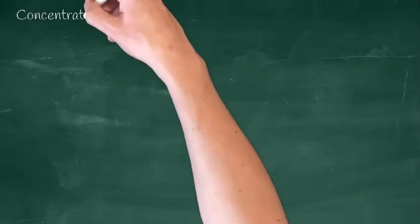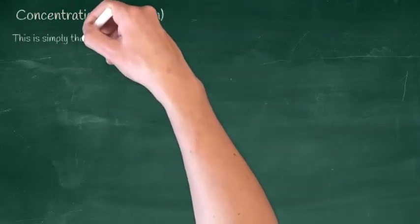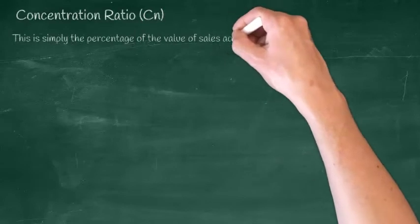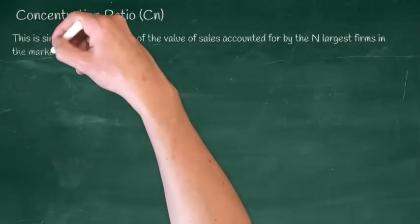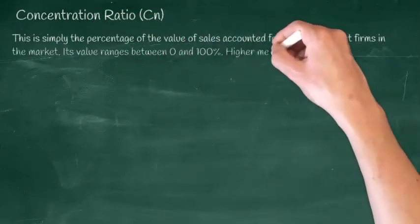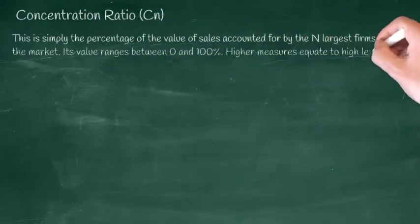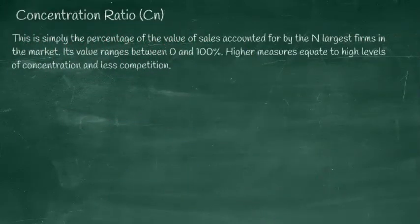The easiest measure is a simple concentration ratio or CN for short. This is simply the percentage of the value of sales accounted for by the N largest firms in the industry or market. Its value ranges between 0 and 100%, with higher measures equating to high levels of concentration and implying less price competition. N is arbitrarily decided by the researcher.